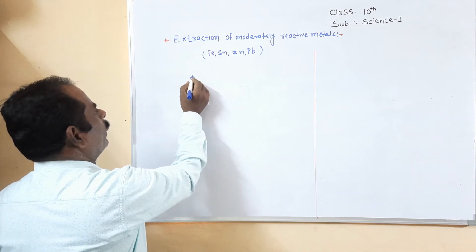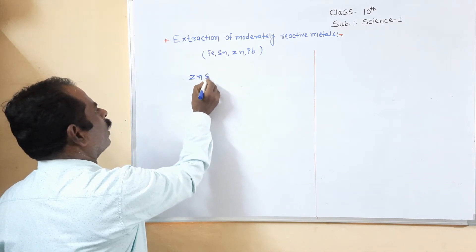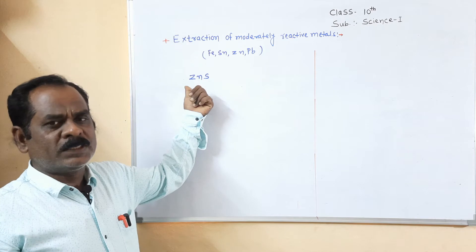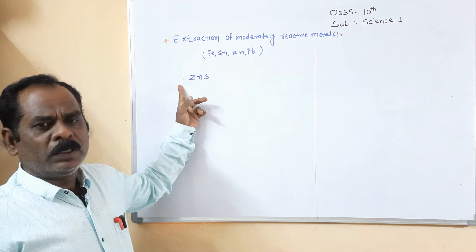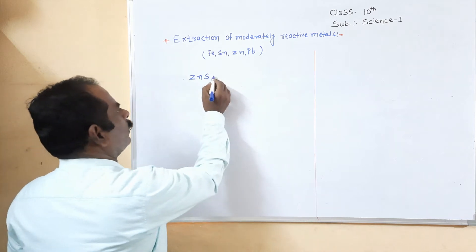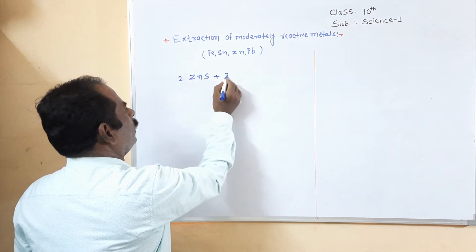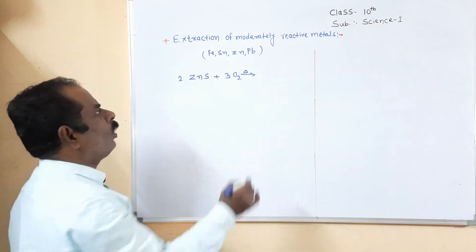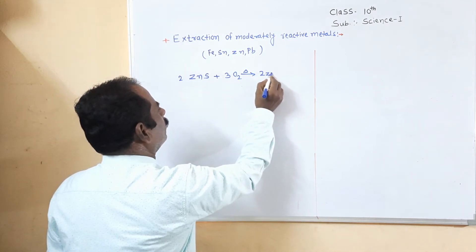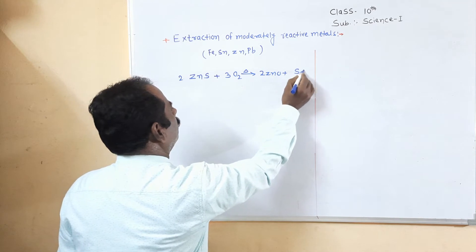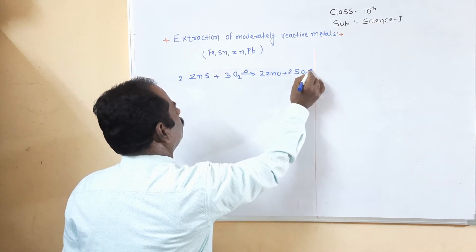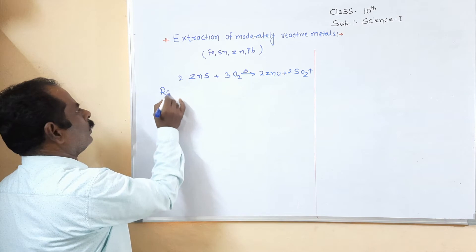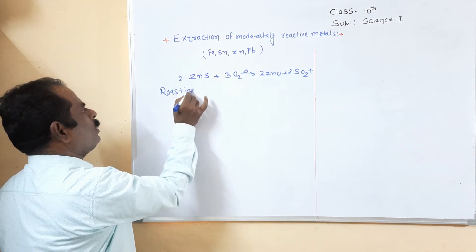For example, zinc is a moderately reactive metal. Zinc mainly occurs in the form of zinc blende, also called zinc sulfide (ZnS). This sulfide ore is strongly heated in excess of air to form zinc oxide and to liberate SO2 gas. This process is called the roasting process.